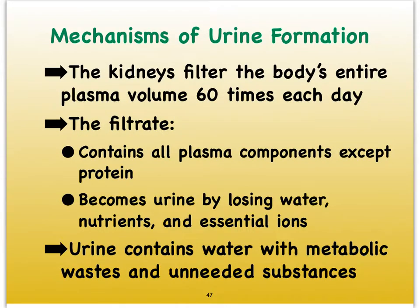The kidneys are magnificent organs in the body because they succeed in filtering all of our plasma volume 60 times every single day, so our kidneys work really hard. After they've filtered our blood plasma, we end up with something called a filtrate in that Bowman's capsule. That filtrate is not at all what urine looks like, so a lot of things must still happen to that filtrate before we can call it urine.